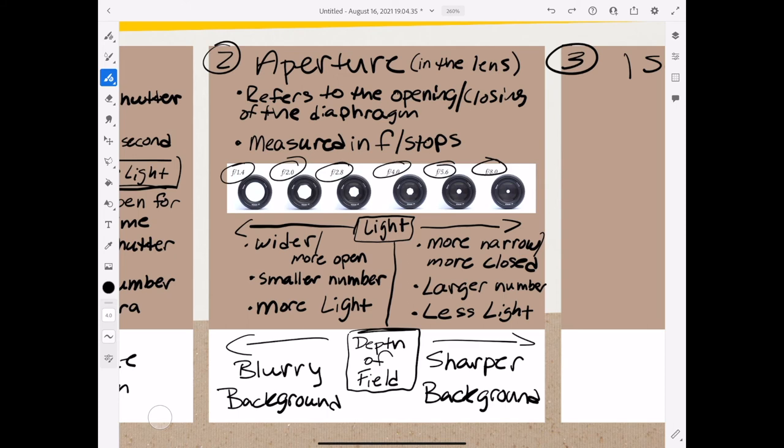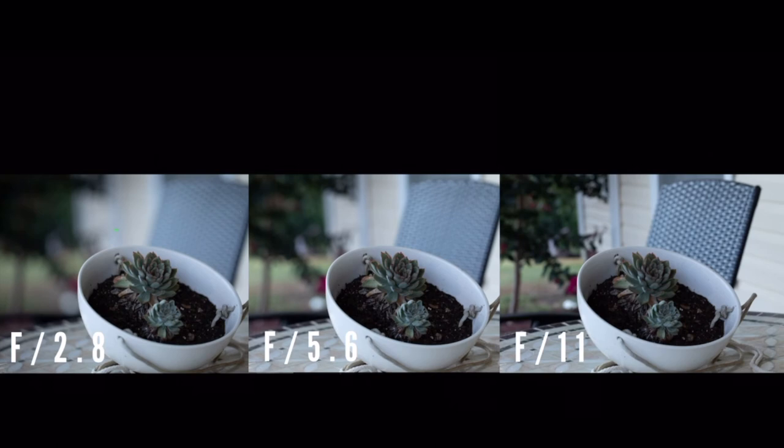Then the more narrow the aperture, the more clear and sharp everything in the photo is—the background, your subject, everything is way more clear. Okay, here's three photos that I took at different f-stops to show you how the depth of field is affected and what you're doing in the photo.